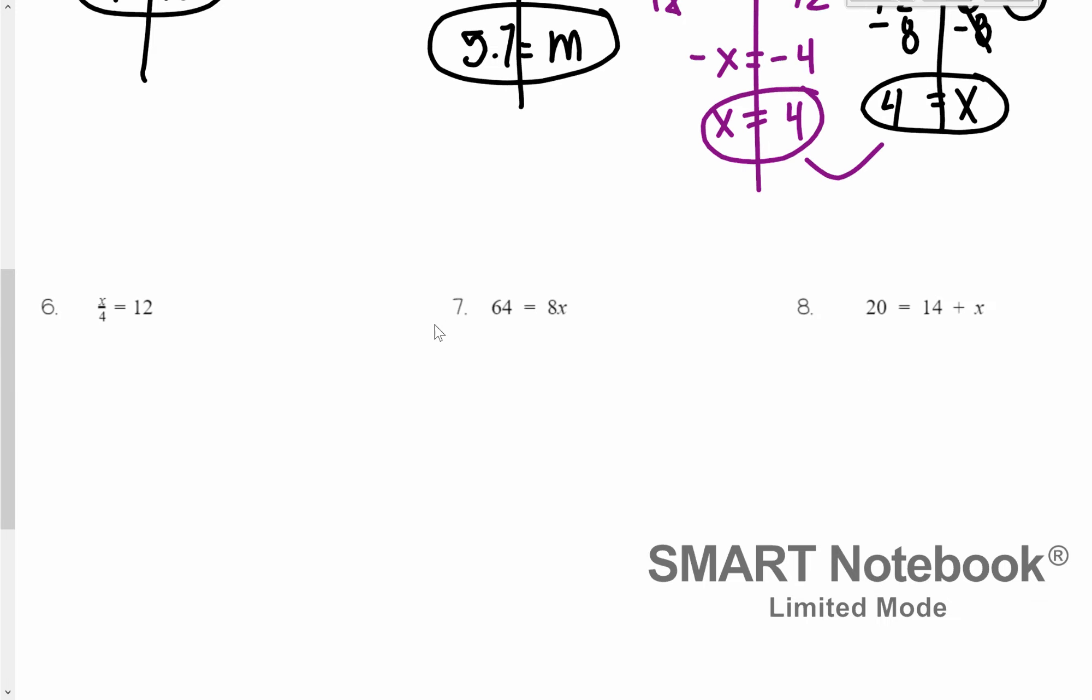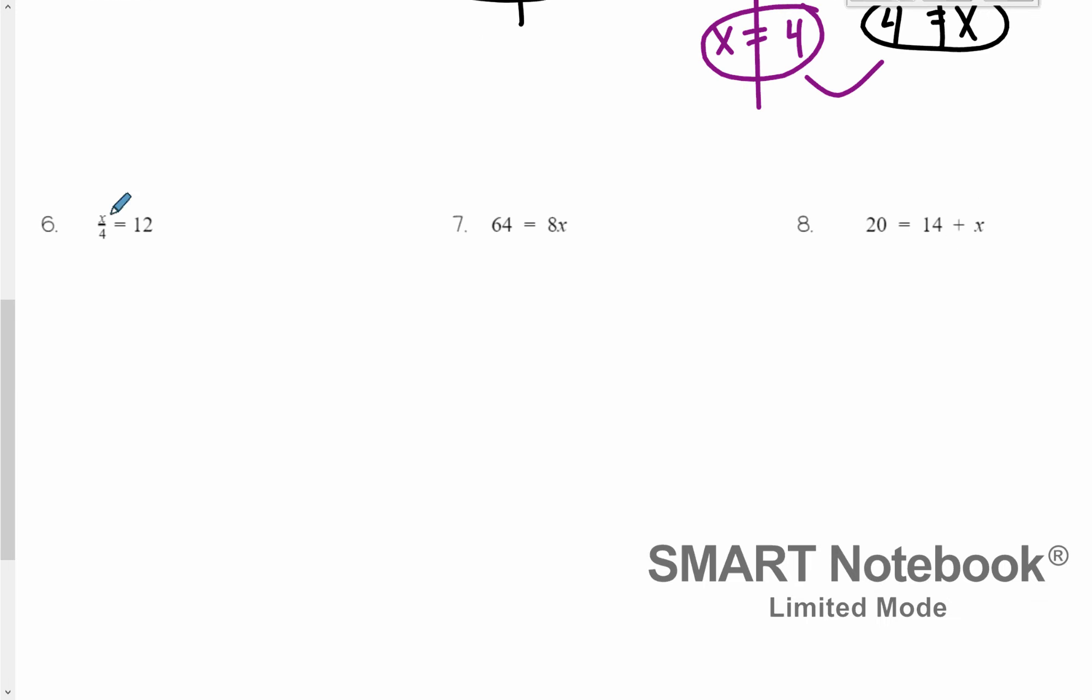Number six. We have to first think about what that fraction bar means. That fraction bar means division. So this is x divided by 4. How do we get rid of divide 4? We do times 4. Remember, we show multiplication with parentheses. Divide 4 times 4 cancels out because that's just 1 and x divided by 1 is just x. 12 times 4 is 48. So we get x equals 48.